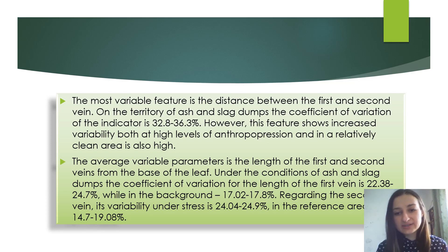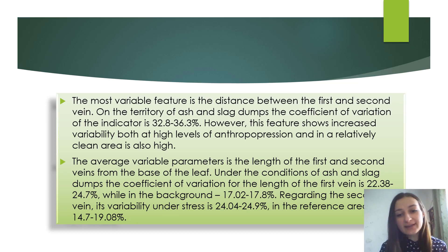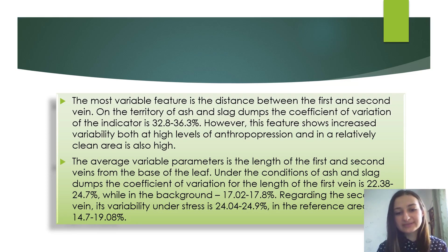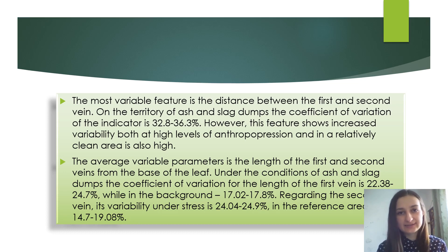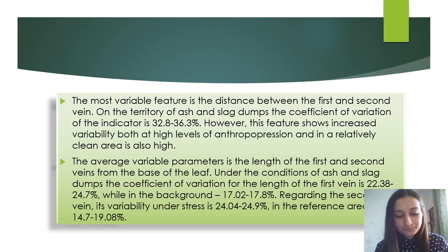On the territory of ash and slack dumps, the coefficient of variation of this indicator is 32.8–36.3%. However, this feature shows increased variability both at high levels of anthropopression and in a relatively clean area. The average variable parameters are the lengths of the first and second veins from the base of the leaves. Under the condition of ash and slack dumps, the coefficient of variation for the length of the first vein is 22.38–24.7%, while in the background it is 17.02–17.8%. Regarding the second vein, its variability under stress is 24.04–24.9%.